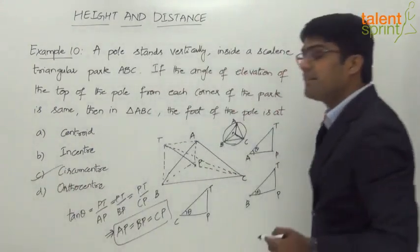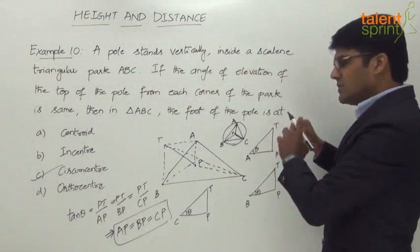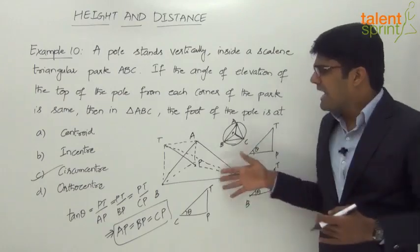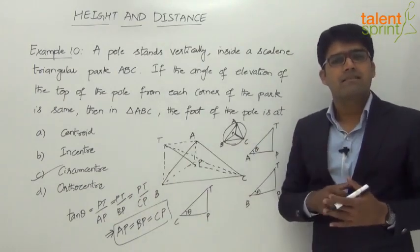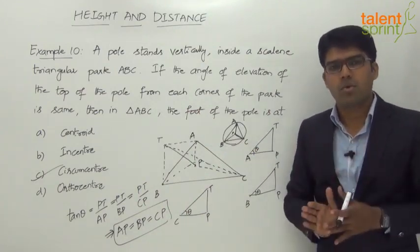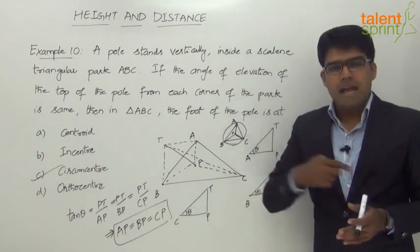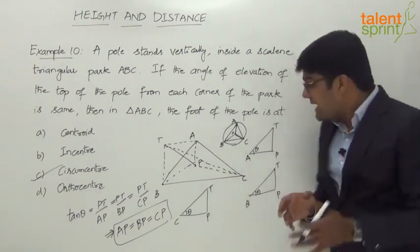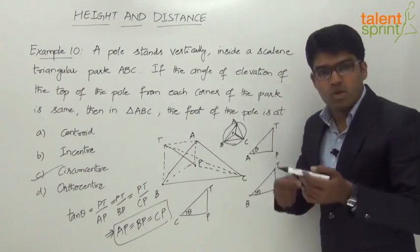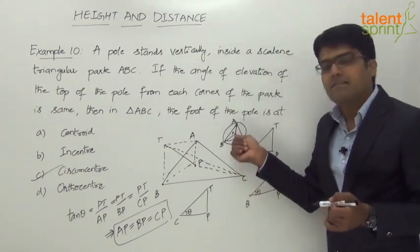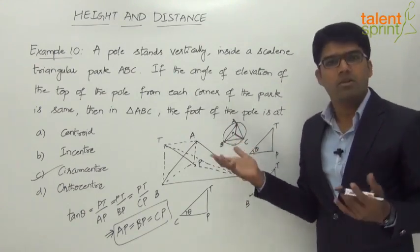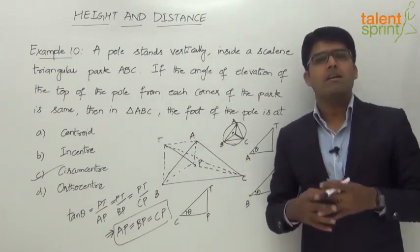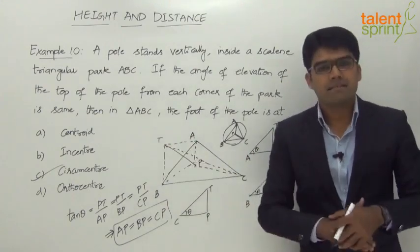We can conclude that the foot of the pole is at the circumcenter of triangle ABC. Though the explanation is a little lengthy, the core idea is visualization: since the length of the pole and the angle theta are the same from all three vertices, the distance from each vertex to the foot of the pole must be equal — the circumradius. So the answer is circumcenter. This question requires analysis rather than calculation.